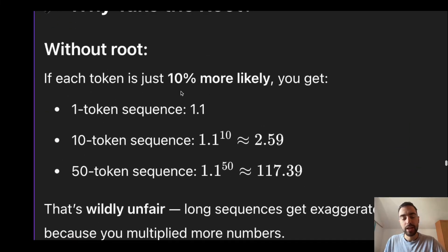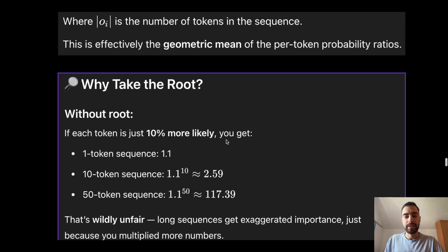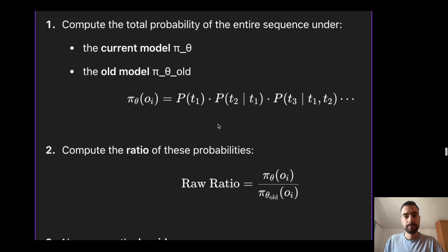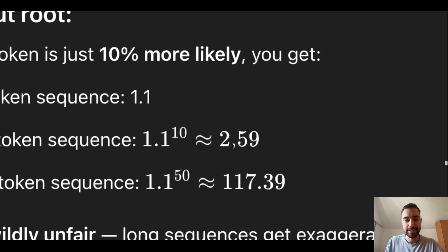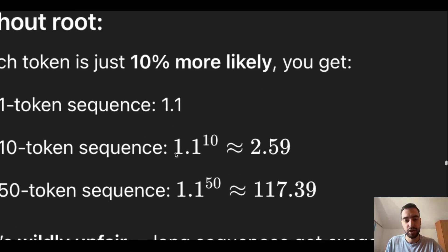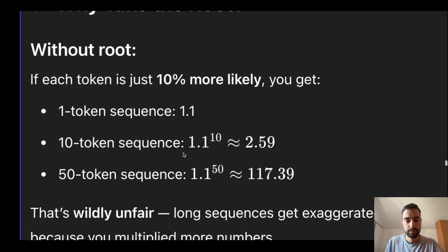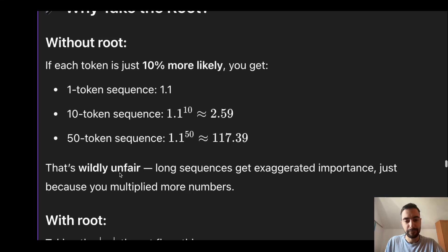Let's say every token is on average 10% more likely to be generated by the new model as opposed to the old model. So if we have just one token in the sequence, then the importance ratio will be 1.1, which is correct. But if we have 10 tokens in the sequence, then the importance ratio will not be 1.1 for every token. It will actually be 1.1 to the 10th, just because we multiplied our probabilities here. So now we will get this as the new average importance ratio, which it's not, it's actually 1.1. Because of the multiplications. So this is wildly unfair, longer sequences get exaggerated importance, just because you multiplied more numbers.